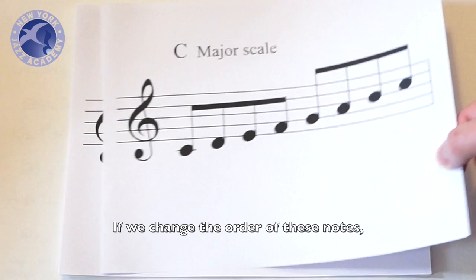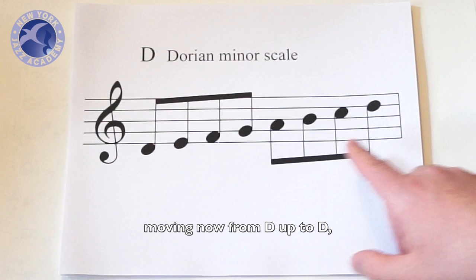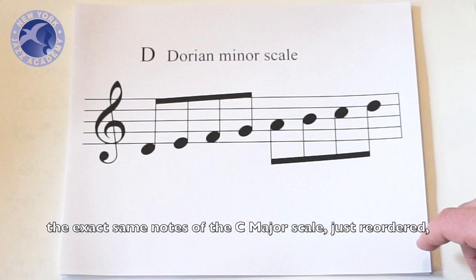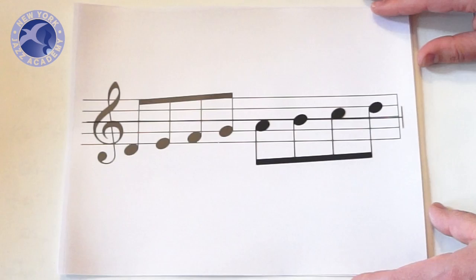If we change the order of these notes, starting with the second note of the C major scale, moving now from D up to D, again no sharps, no flats, the exact same notes of the C major scale just reordered, we get the D Dorian minor scale.